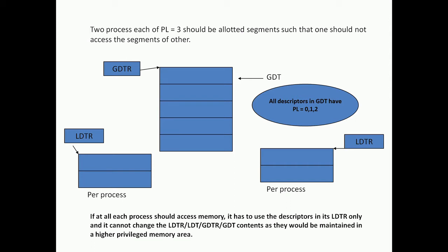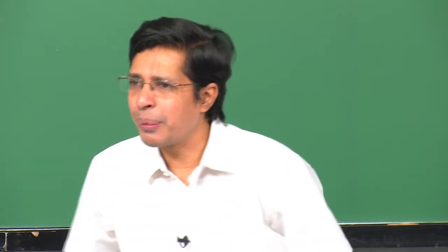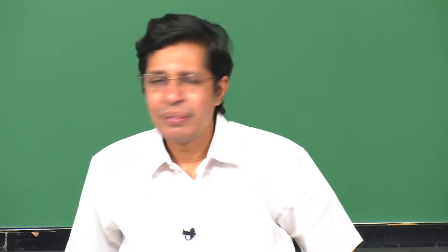This is the most important slide, which will answer many questions. We will spend at least 10 minutes understanding what it means. This slide talks about inter-process protection. Let us say there are 2 processes, each at privilege level 3, meaning they are executing through a code segment whose privilege level is 3. When process 1 is created by the operating system, it creates an LDT for it. When process 2 is created, it creates another LDT for it.